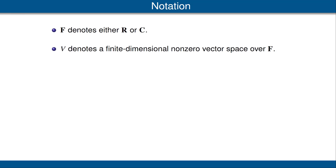Let's review the standard assumptions about notation that we will be using in this section. As usual, F denotes either the scalar field R of real numbers or the scalar field C of complex numbers. We've been talking about inner product spaces, but the material we're going to be discussing does not really rely upon inner products. Thus, from now on, we're going to assume that V is a finite-dimensional non-zero vector space over our scalar field F. In other words, V is no longer necessarily an inner product space. It is finite dimensional, and we've added the assumption that V be non-zero just to avoid some trivial exceptions to some of the results.